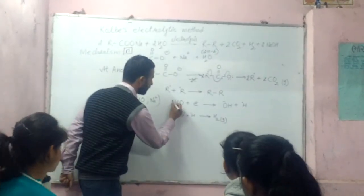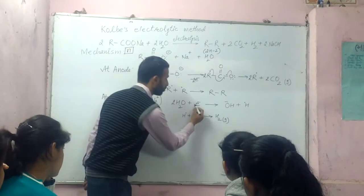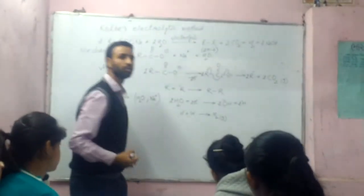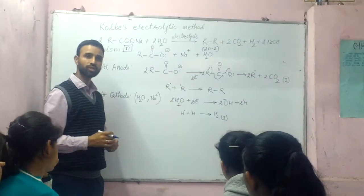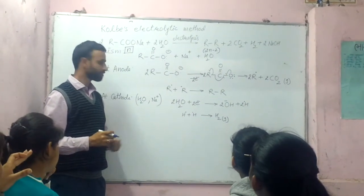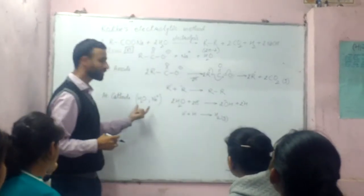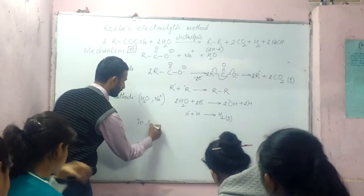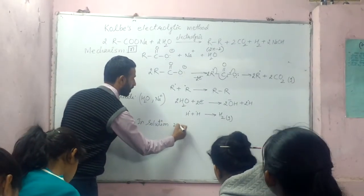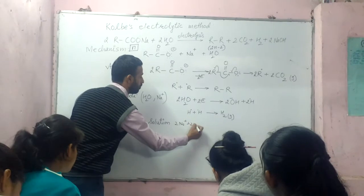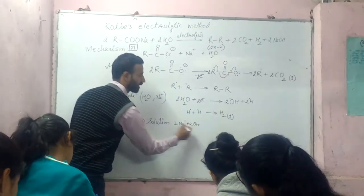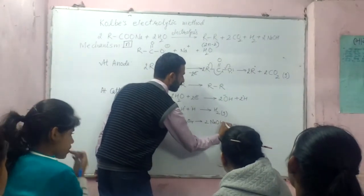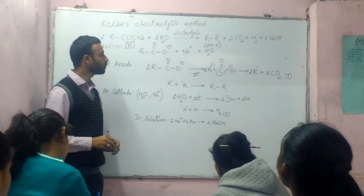We need two water molecules and two electrons so that we get two hydrogen free radicals. What is left in the solution? OH⁻ is left. And sodium ions are also left. So in the solution we have two Na⁺ and two OH⁻ remaining.